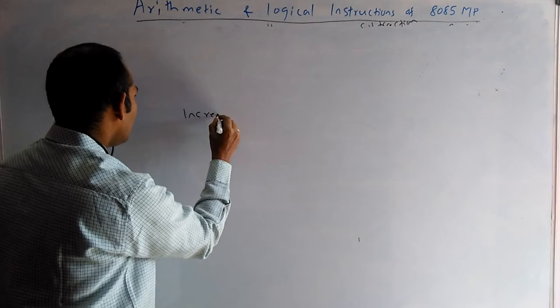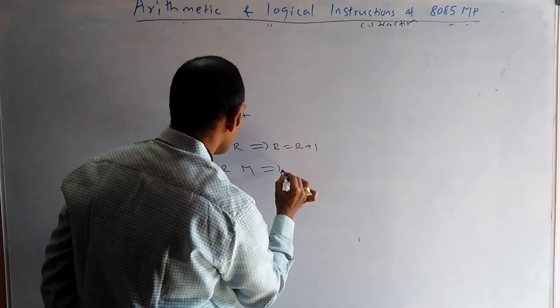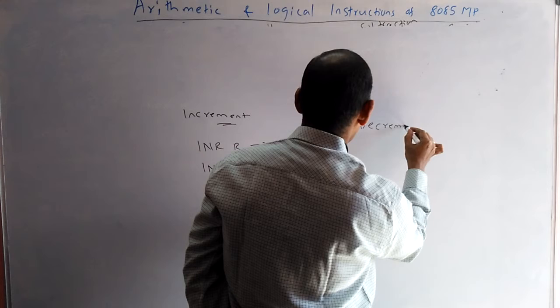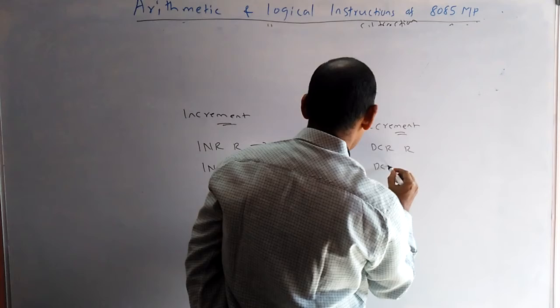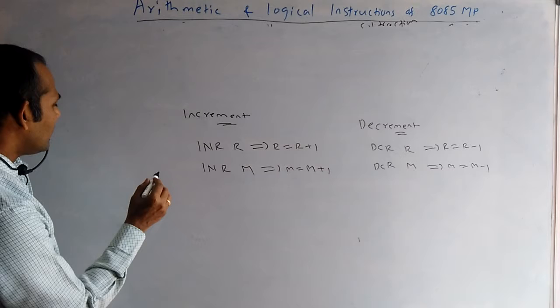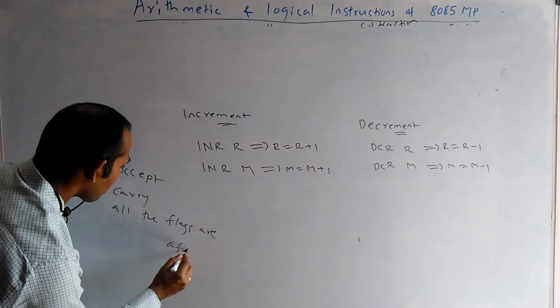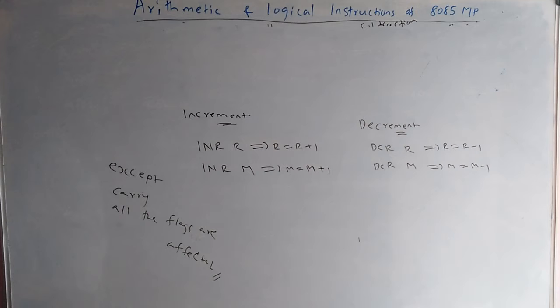The instruction set also contains increment and decrement instructions. There are two increment instructions: INR R and INR M, where the value is increased by one. Similarly, there are two decrement instructions: DCR R and DCR M, where the value is reduced by one. For these instructions, all flags are affected except carry.